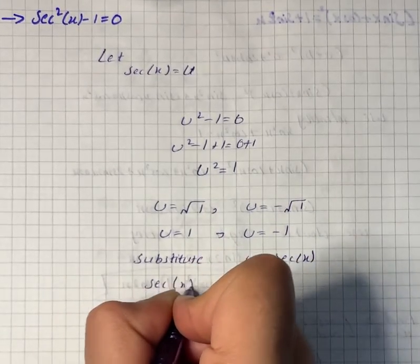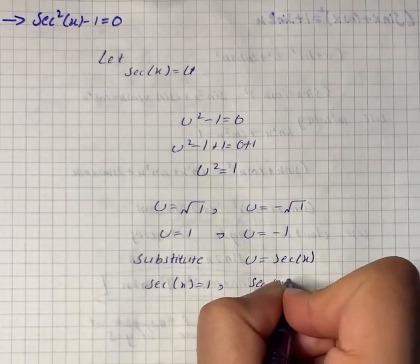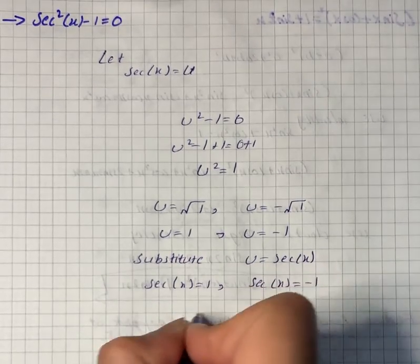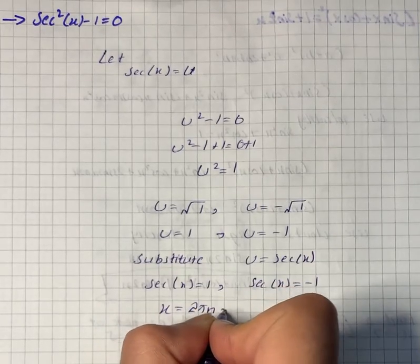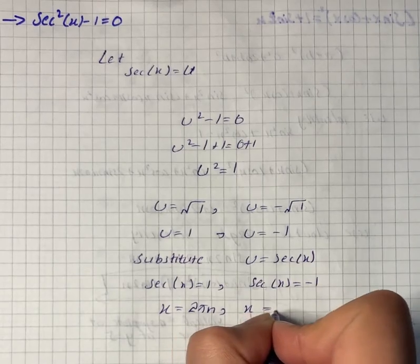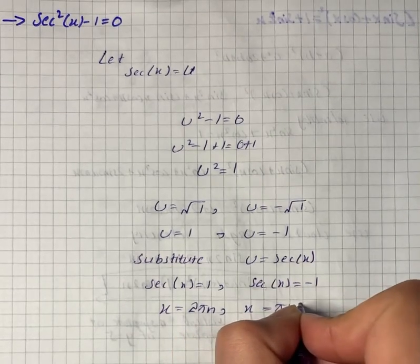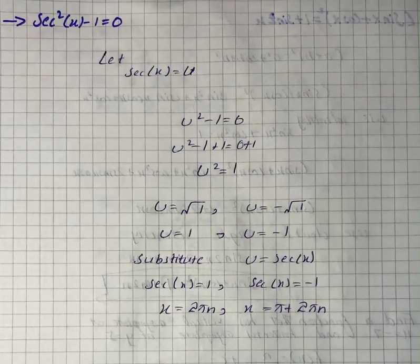So we will have sec x equals 1 and sec x equals minus 1. So x becomes 2πn and x becomes π plus 2πn. So here is our solution set for x.